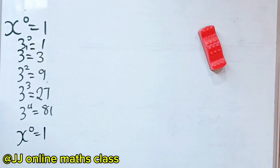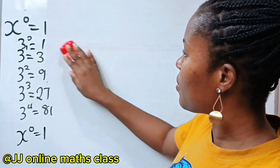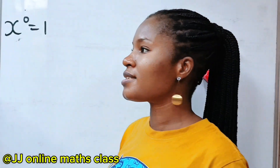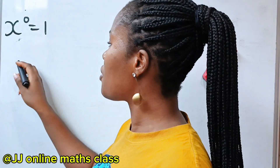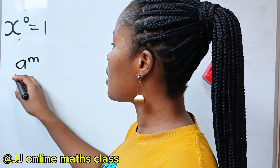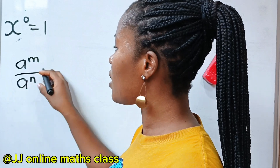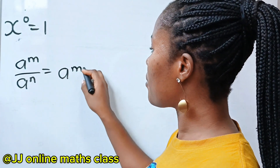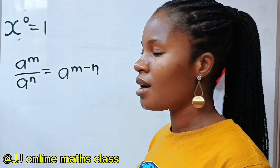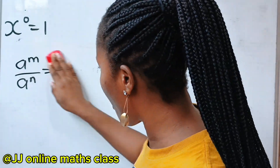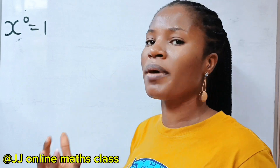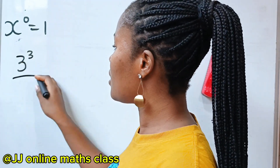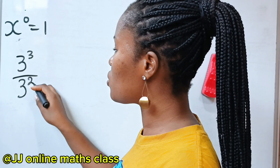Now, to the second reason. Remember that a to the power of m divided by a to the power of n, according to the law of exponents, is equal to a to the power of m minus n. Now let's start with some physical numbers that we can discuss. For example, if I say 3 to the power of 3 divided by 3 to the power of 2.